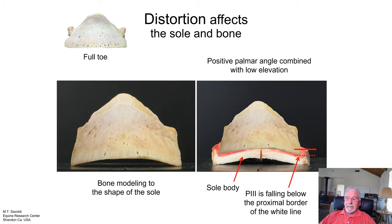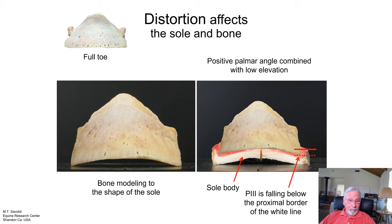The distal border of the P3 bone is below the proximal edge — the proximal border of the white line. Now the tissue has been removed, so this bone is not exactly this low in elevation; it'll have a little more. But you're seeing the effects it has on the P3 bone.